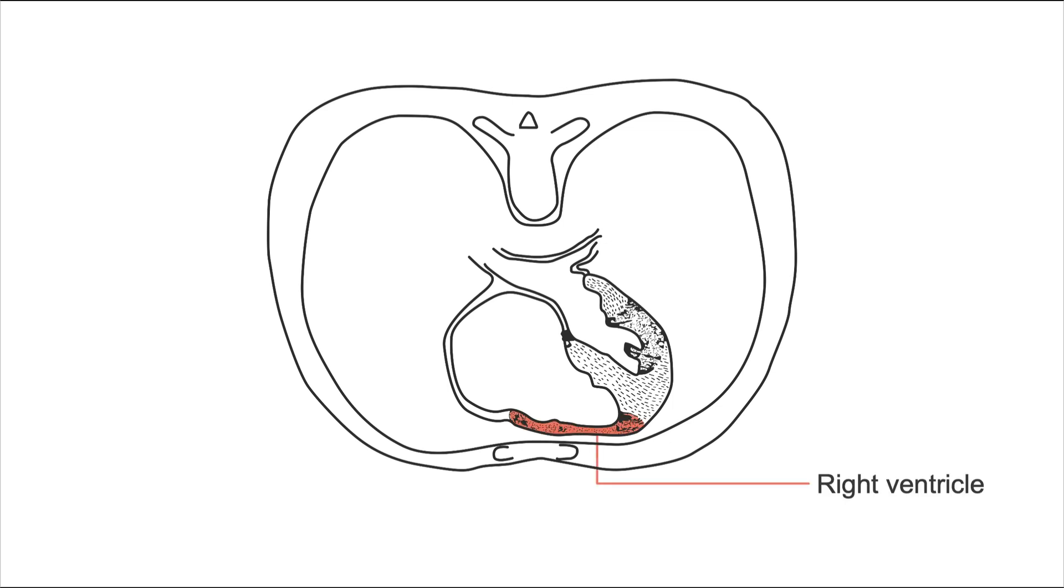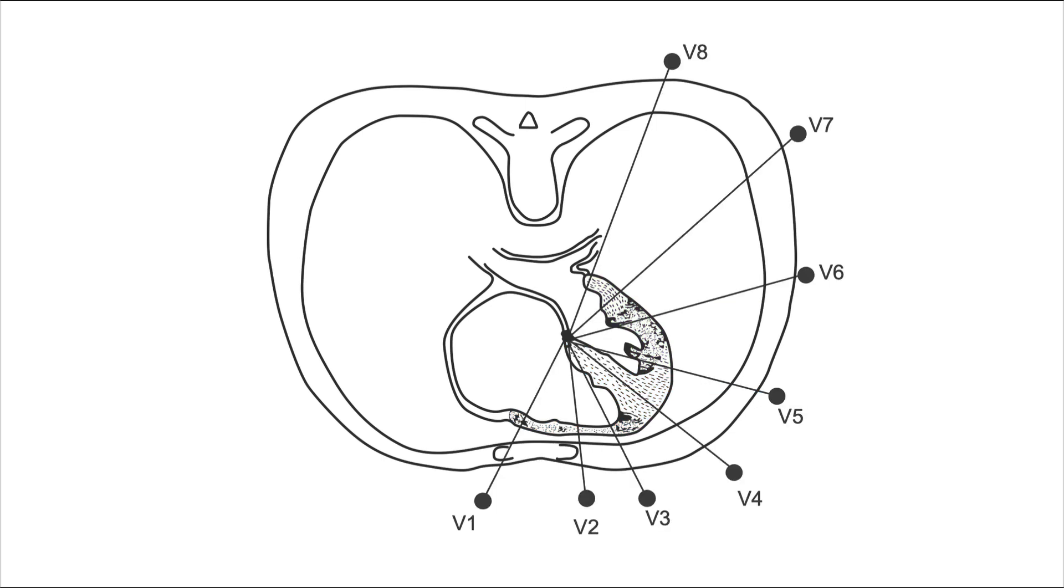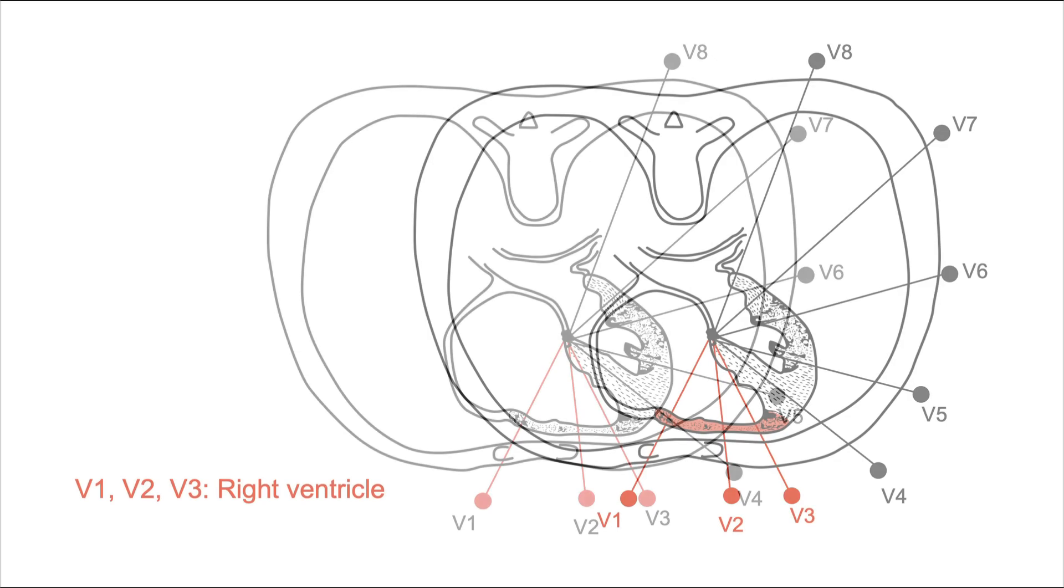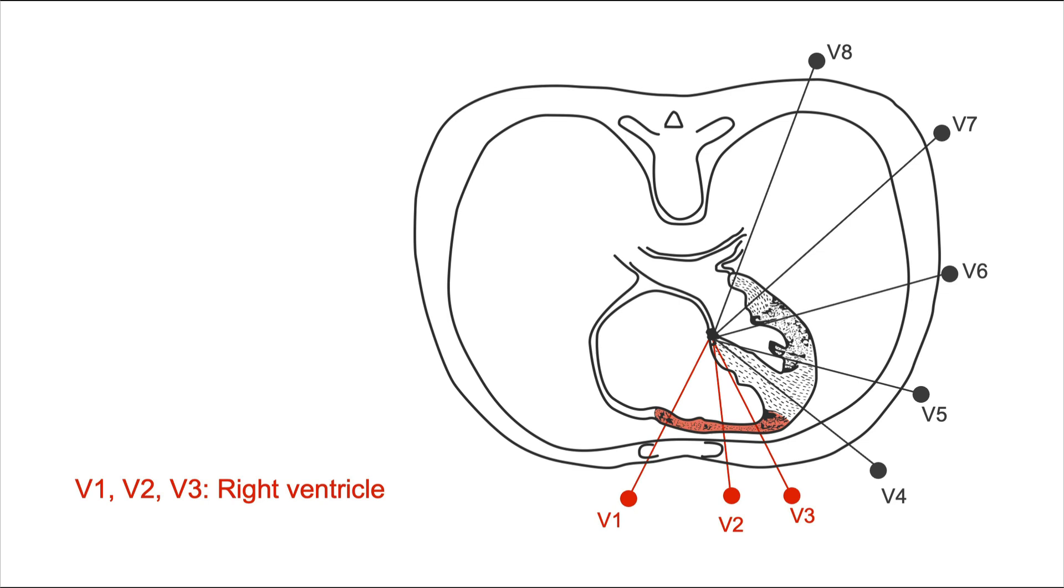This is the right ventricle, this is the interventricular septum, and this is the left ventricle. Now let's relate the leads to the actual areas of the heart that they are depicting. Let's start with leads V1, V2, and V3. They're going through this part of the heart, which is the right ventricle. So when you have changes on the ECG in leads V1, V2, and V3, it's probably the right ventricle that's affected.